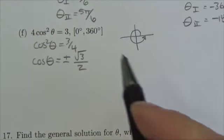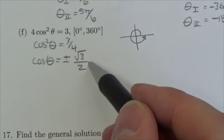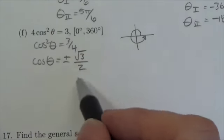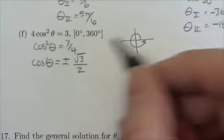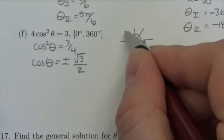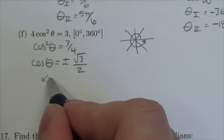The square root of 3 over 4 is root 3 over 2, so I get positive or negative root 3 over 2. Now I recognize that as being a unit circle ratio. The positive and the negative are important because that tells me I'm going to be in all four quadrants here.